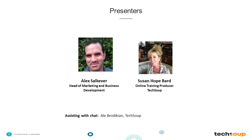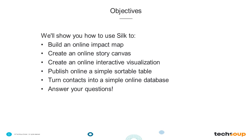Also on the back end, we have Ali Bisbekin, and she's going to help with any technical questions or audio. I'd like to take a minute to review our objectives. Today Alex is going to show you how to use Silk to build an online impact map, create an online story canvas, create an online interactive visualization, publish a simple sortable table, turn contacts into a simple online database, and also answer all of your questions.